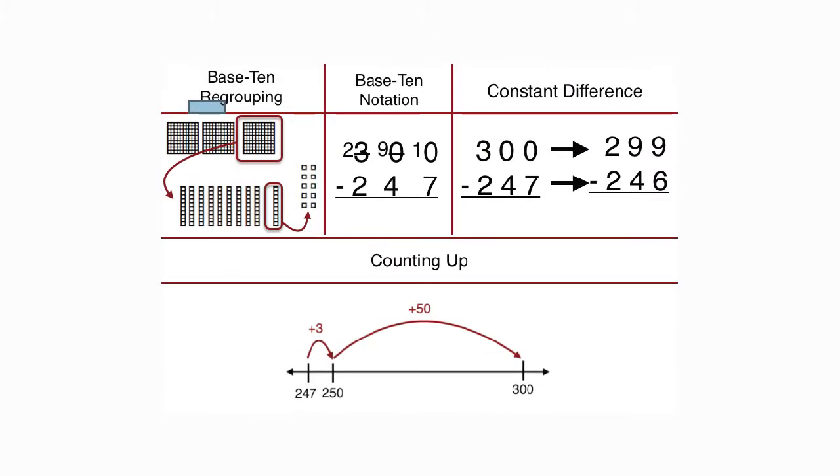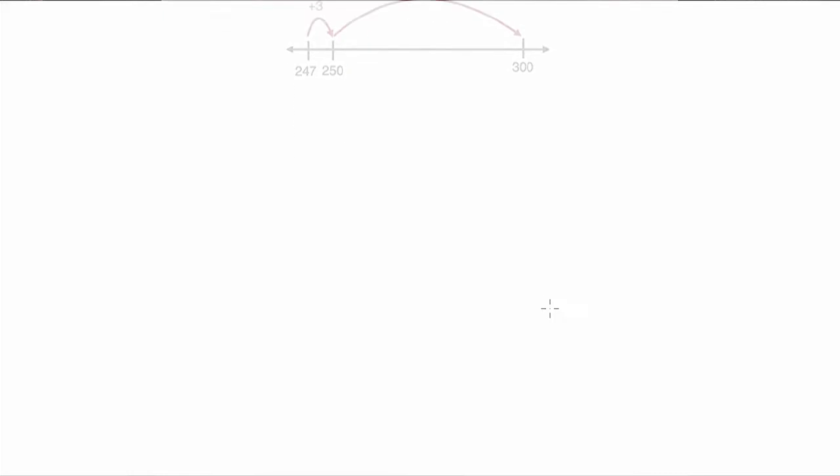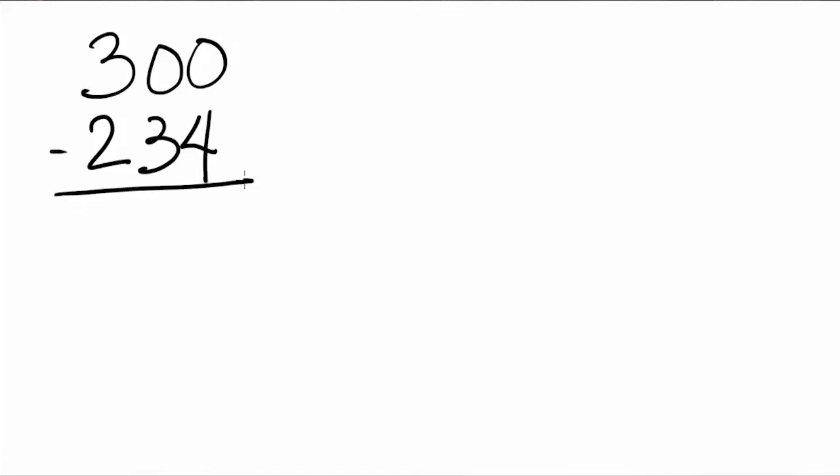Shown here are four examples of strategies that students may use to solve a subtraction problem. Using numbers in context or in a word problem helps students think about how to solve a problem. For example, let's say that a boy, Joseph, wanted to buy a new mountain bike for an upcoming adventure club trip. The mountain bike that Joseph wants costs $300. He has saved $234 so far. How much more money does he need?